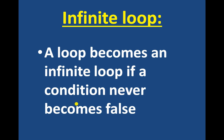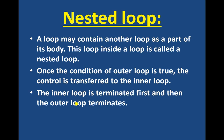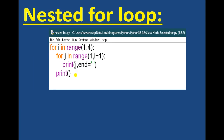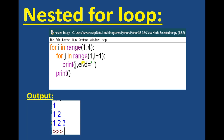Next is the infinite loop — a loop becomes infinite if a condition never becomes false. Next is the nested loop: a loop may contain another loop as part of its body, and a loop inside a loop is called a nested loop. When the condition of the outer loop is true, control is transferred to the inner loop. The inner loop terminates first, and then the outer loop terminates. In a nested while loop example, the inner while loop is inside the outer while loop. Similarly, in a nested for loop, there is an outer loop and an inner loop, each printing output accordingly.